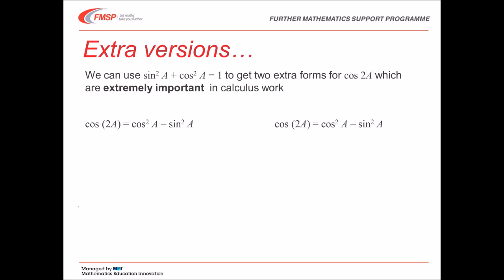There are a couple of extra versions of the formula for cos of 2A, which are extremely important in calculus work. You won't need them until the second year of further mathematics, but that will probably still be before you cover them in mathematics, so we'll look at them now. We'll look at deriving both of these. We're starting with cos squared A minus sin squared A from the previous slide, and we're going to replace the sin squared A with 1 minus cos squared A, from the Pythagorean identity that you know from AS maths.